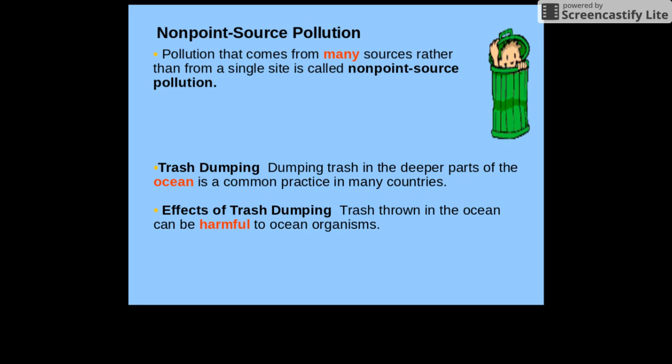Non-point source pollution comes from many sources rather than from a single site, so you won't be able to identify exactly where it came from. For example, trash dumping — dumping trash in the deeper parts of the ocean is a common practice with many countries. It's possible you could identify which country was doing it if you saw it happening, but otherwise you wouldn't. Trash thrown in the ocean can be harmful to ocean organisms.